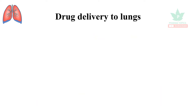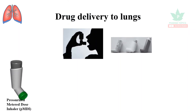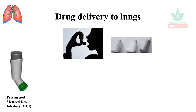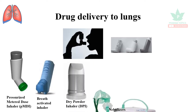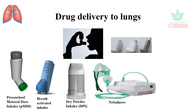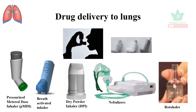Let us see how drug delivery to the lungs happens and what devices are used. The most common are inhalers, which are of different types: pressurized metered dose inhalers, breath-activated inhalers, dry powder inhalers, and nebulizers, which are useful in children. Rotahalers keep a capsule that the patient inhales via the mouth.